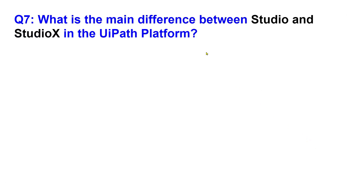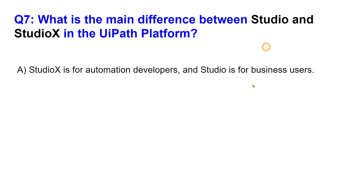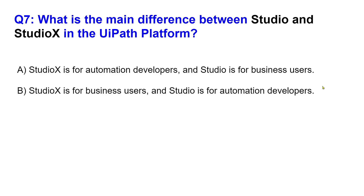Let's move on to the next question: what is the main difference between Studio and Studio X in the UiPath platform? Option A: Studio X is for automation developers and Studio is for business users. Option B: Studio X is for business users and Studio is for automation developers — just the opposite of option A.